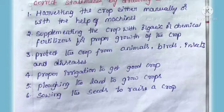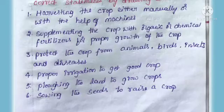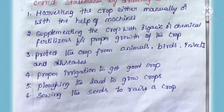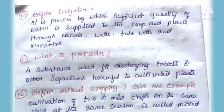Third one: Protect the crop from animals, birds, insects, and diseases. Fourth one: Proper irrigation to get a good crop. Fifth one: Plowing the land to grow crops. Sixth one: Sowing the seeds to raise a crop.